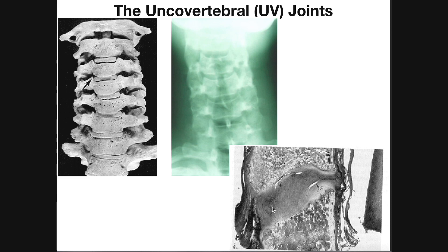The reason this fissuring is important is that as it continues, it essentially divides the intervertebral disc into a superior half and an inferior half. This fissuring does not completely separate the two halves — they're still connected, but it's a loose connection. They're sort of semi-separated, and what this allows is the formation of what's called a bipartite disc.